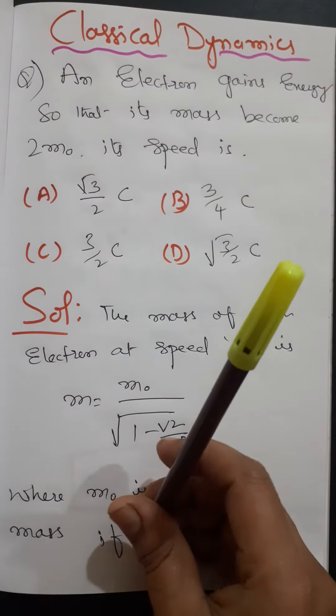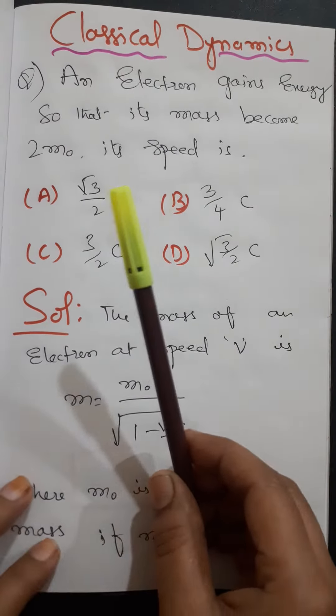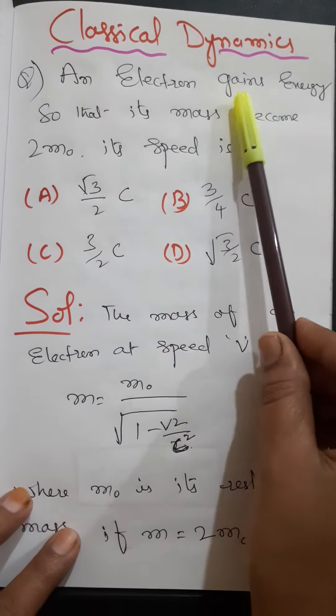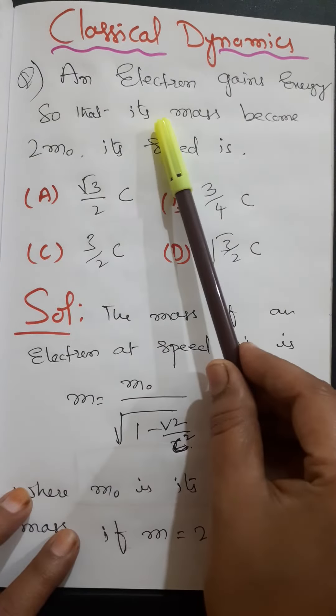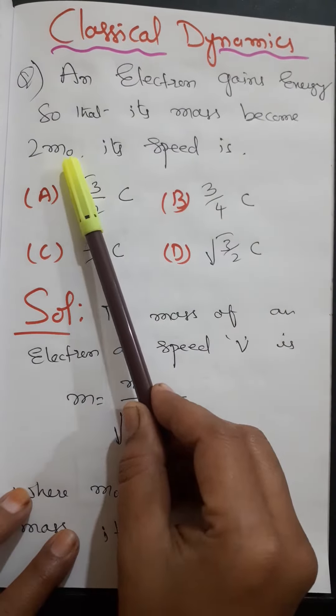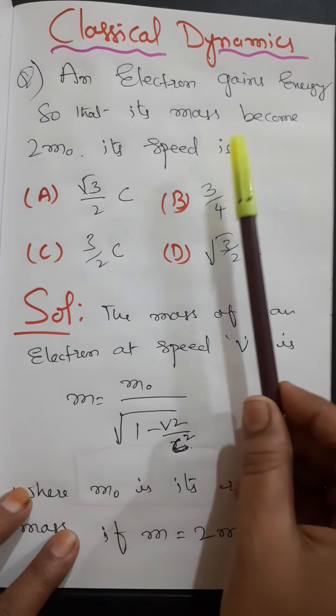Good morning friends. Today I am going to solve classical dynamics most important problems. Here the question is: an electron gains energy so that its mass becomes 2m0. Its speed is what?